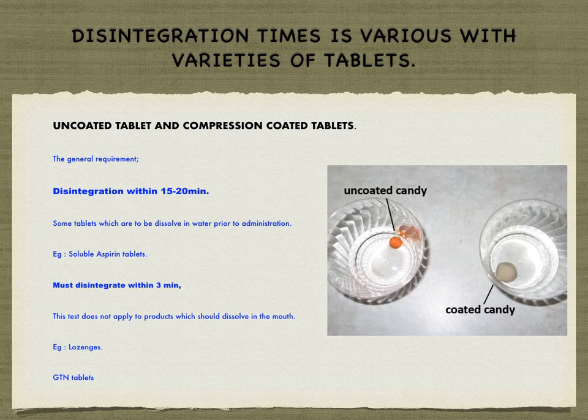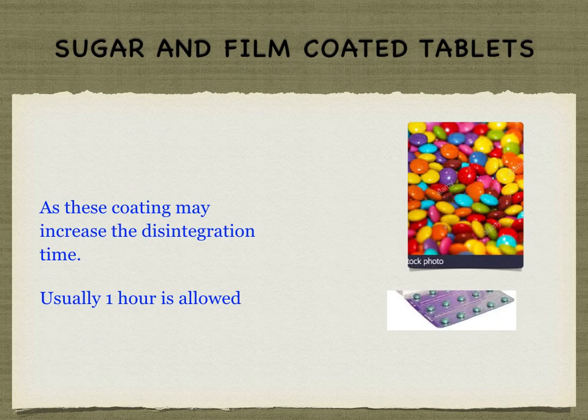This test does not apply to products which dissolve in the mouth, for example lozenges or GTN tablets. This diagram shows how an uncoated tablet and a coated tablet look. For sugar and film coated tablets, as these coatings may increase the disintegration time, usually one hour is allowed. These are examples of coated, film coated, and sugar coated tablets.